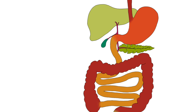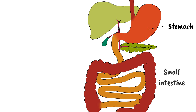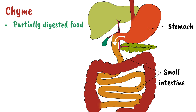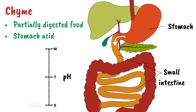The material that goes from the stomach to the small intestine is known as chyme. Chyme contains food that has been partly digested as well as stomach acid, so it's very acidic and must be neutralized.